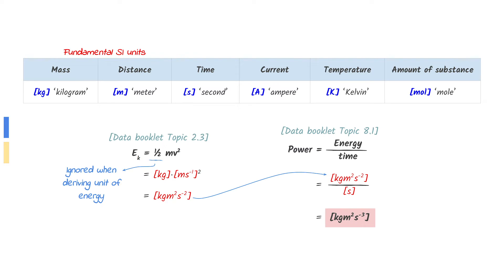Place this into the power equation. Divide by seconds to find your answer. The fundamental SI unit for power is kilogram meter squared per second cubed.